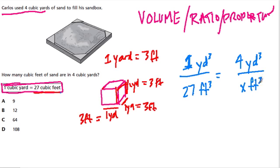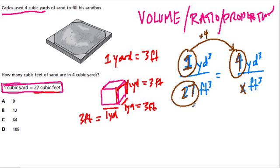Ignore all the cubic feet and yards for a moment, just look at the numbers. We're going from one to 27, and then four to blank. If we went from one cubic yard to four cubic yards, we multiply by four. To keep everything equal and proportional, I'm going to multiply 27 by four.